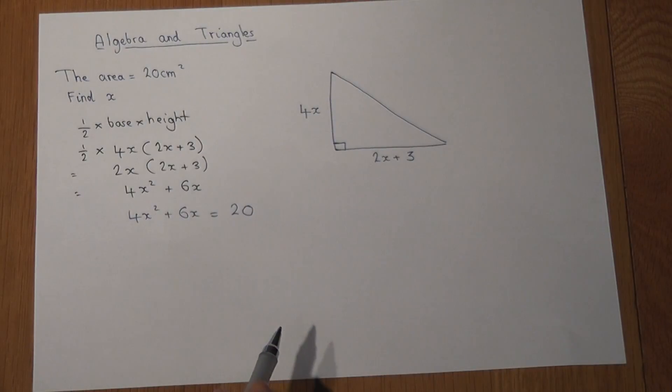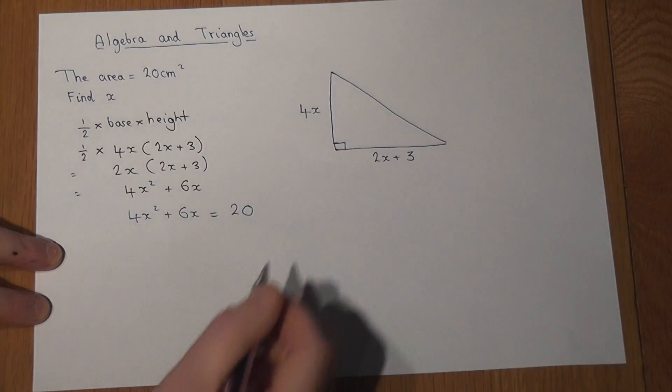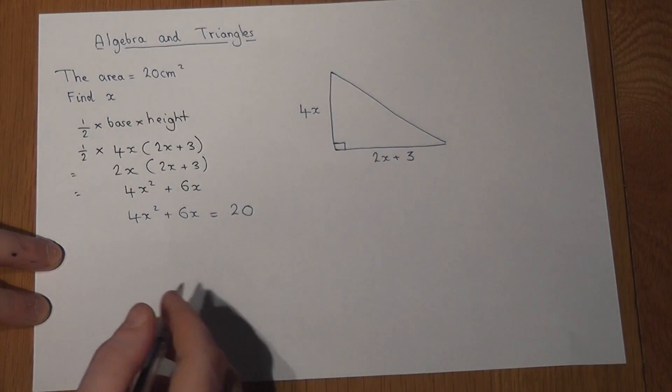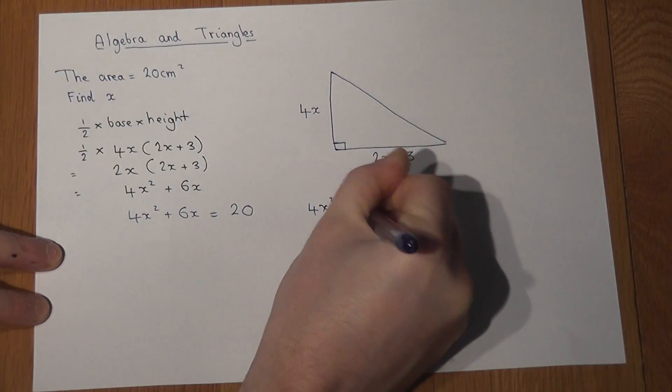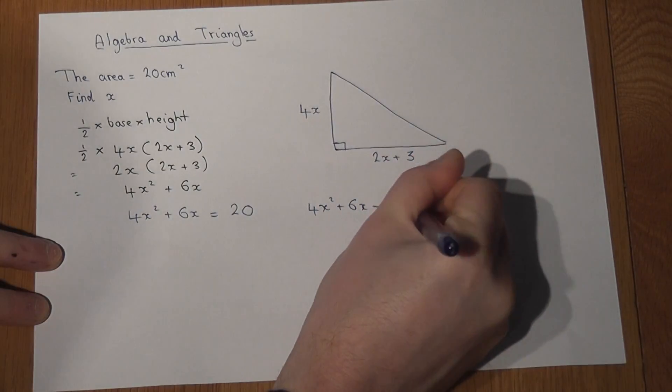It's an x squared equation, it's quadratic. So to solve this, I need to get the equation equal to 0. I can take away 20 from both sides. 4x squared plus 6x take away 20 equals 0.